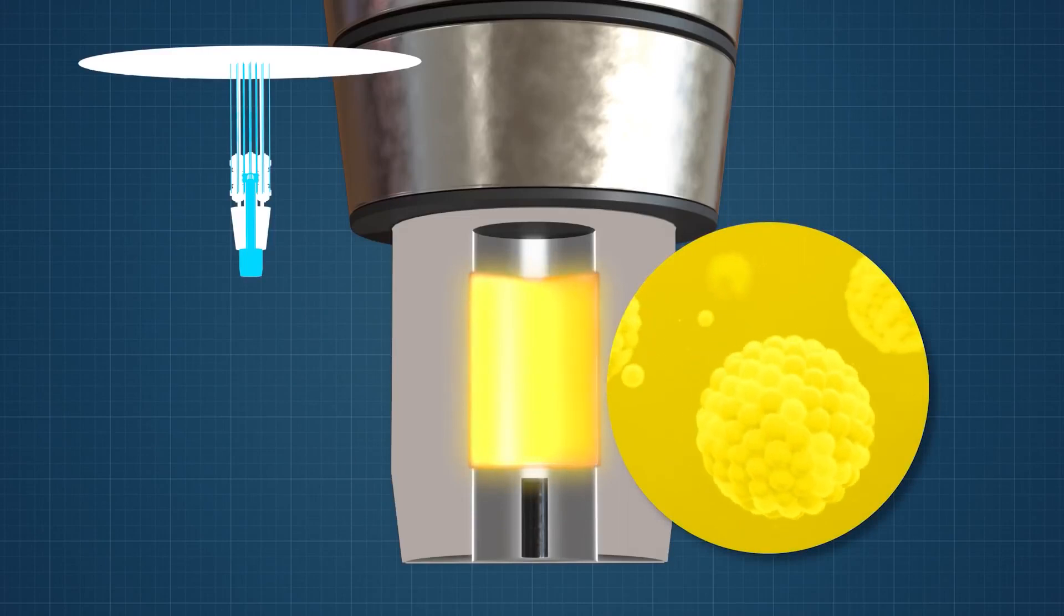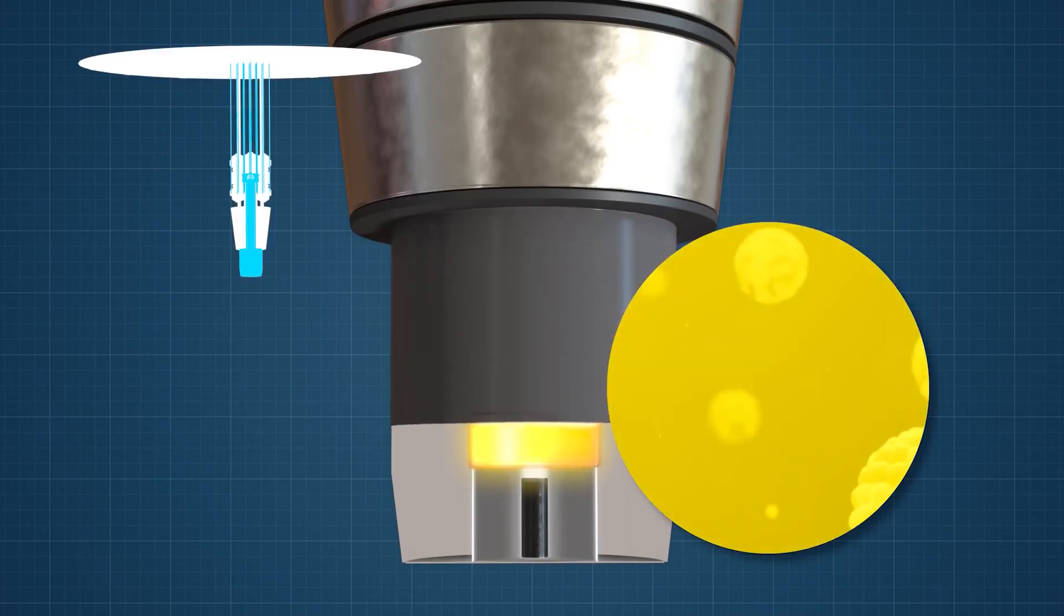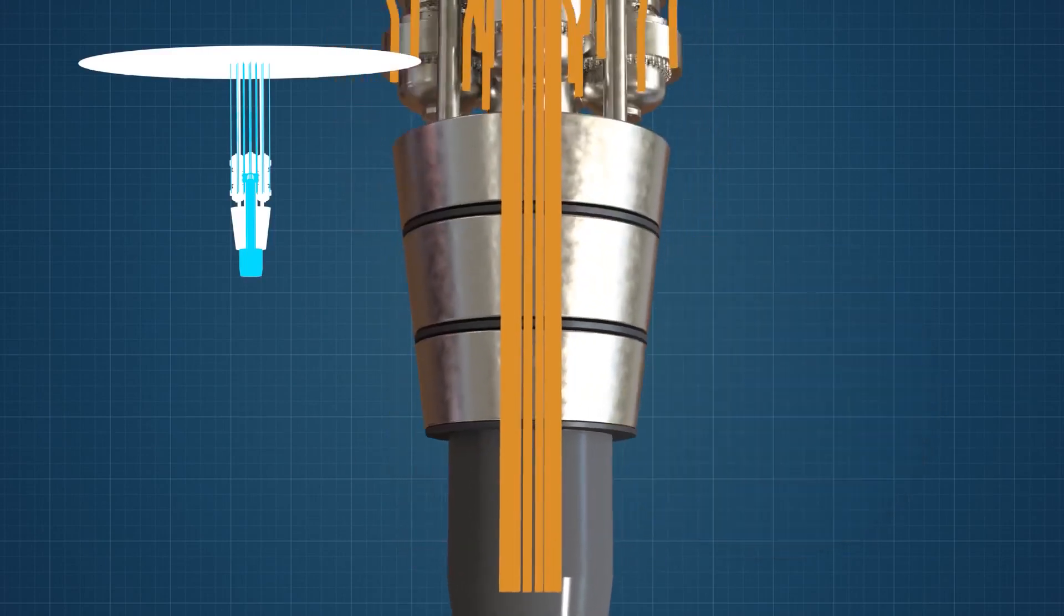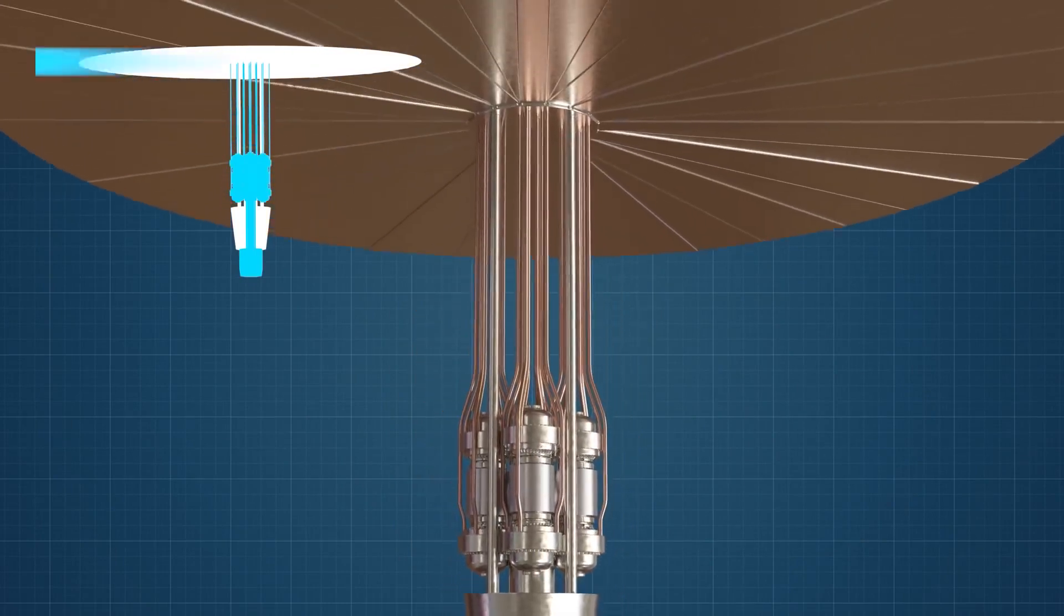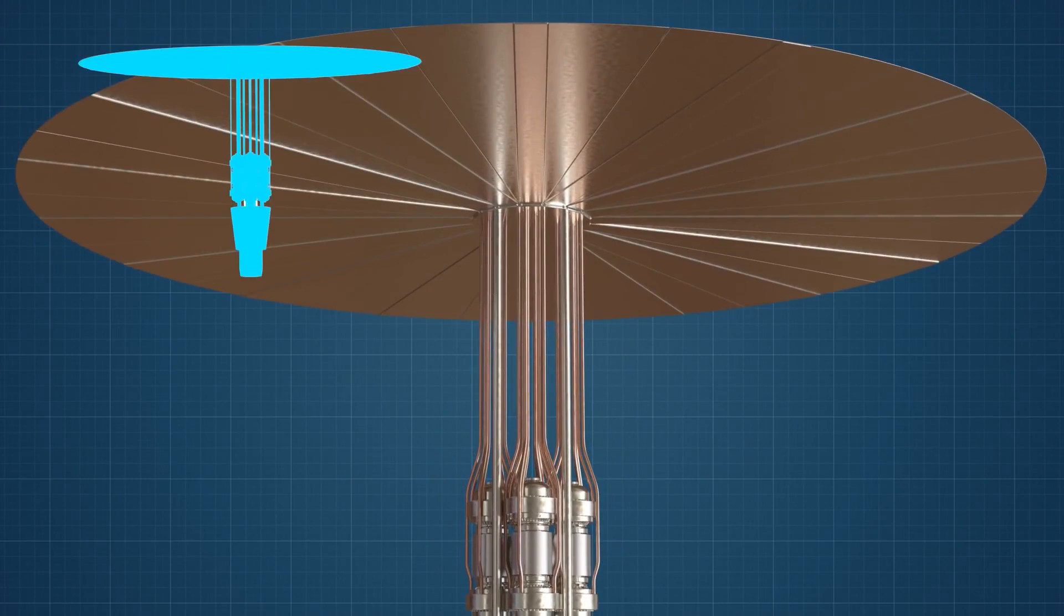The reactor uses nuclear fission to produce heat, which is delivered by heat pipes to power generators known as sterling converters. A radiator is used to keep the sterling converters cool.